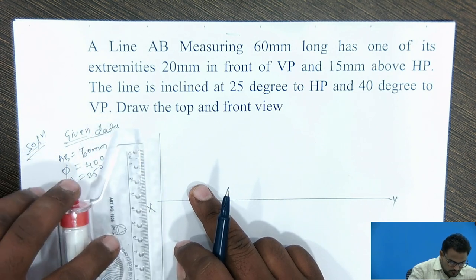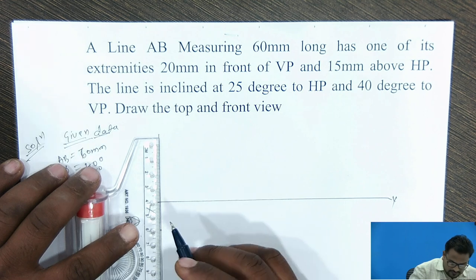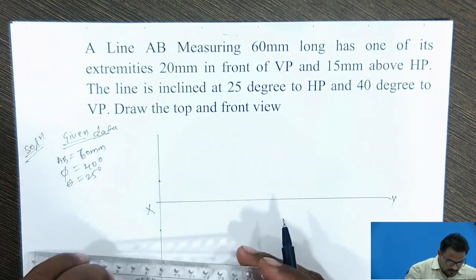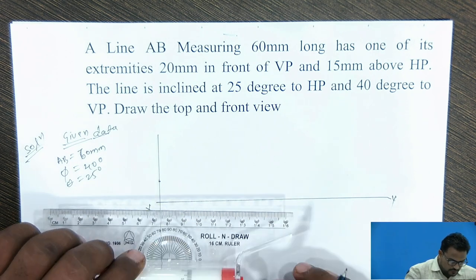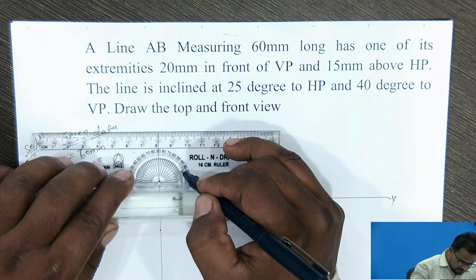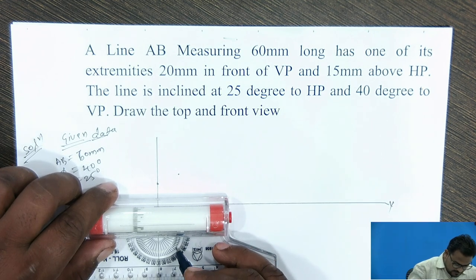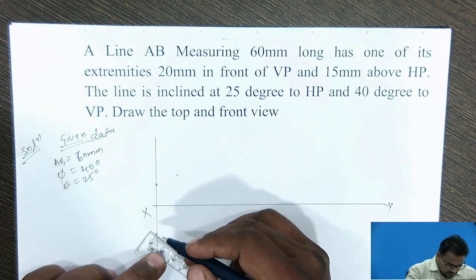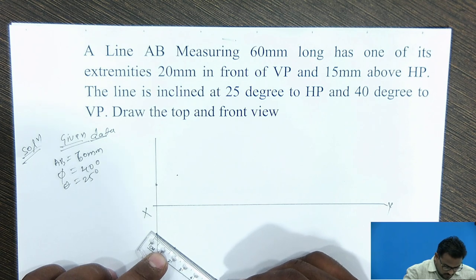I have to mark 20 mm in front of VP and 15 mm above HP. Two angles are given: 25 degrees to HP and 40 degrees to VP. I have to take the 25 degree line on one side and 40 degrees on the other side, and draw the 60 mm long line.